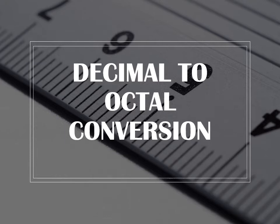In this session, we are going to discuss how to convert a decimal number into an octal number. Decimal numbers have 10 values from 0 to 9, and their base value is 10. In octal numbers, we have 8 values from 0 to 7, and their base value is 8. So here we have to convert a base 10 number to a base 8 number.